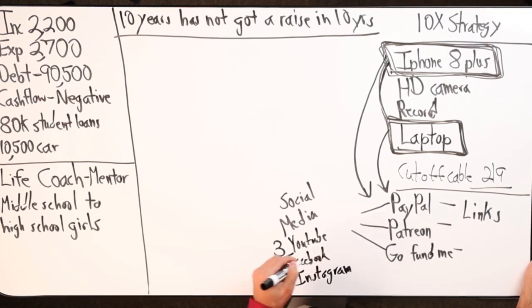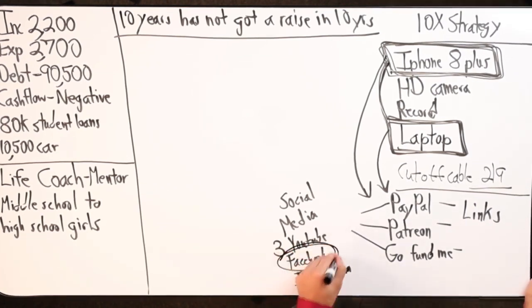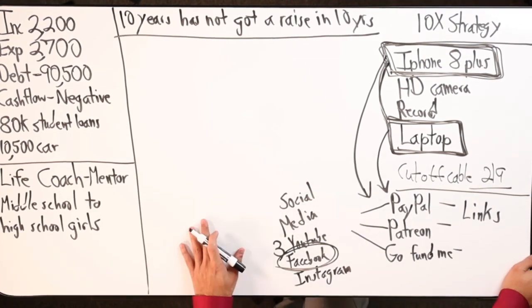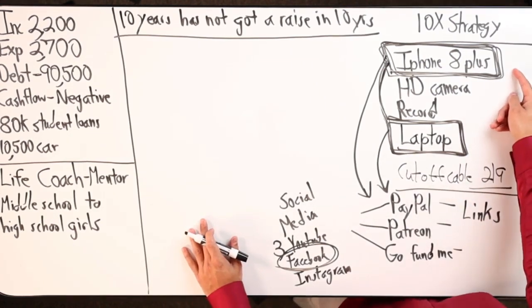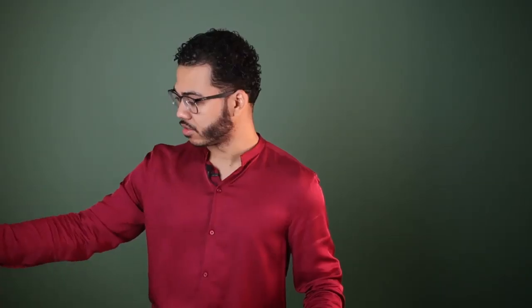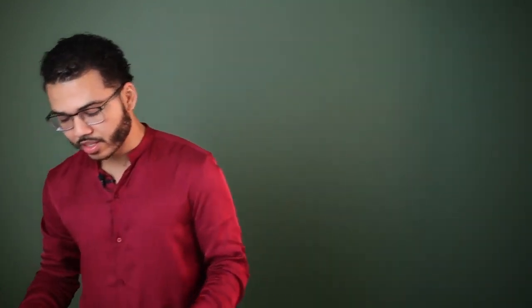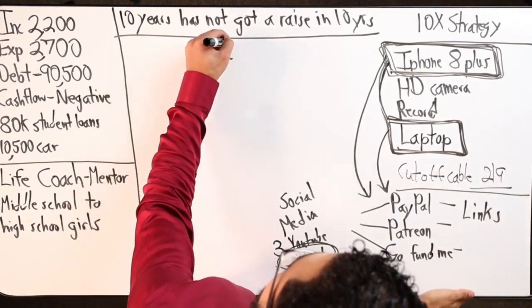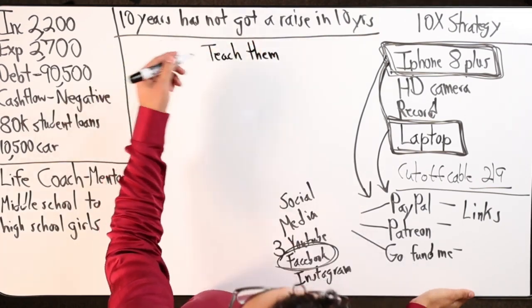I told her, pick one that you feel most comfortable with. And I believe she said Facebook. And you're going to create a group on Facebook. And you're going to start posting content using your money-making machine number one, iPhone 8. Just like this. Walk around all day long. Go to work. Show people your commute. Tell people your value. And you're going to say at the end of the video, beginning, middle: Hey, if you found value in this video, I'd love for you to help me out. My goal is to become a life coach. I want to mentor middle school to high school girls. And here is what I want to teach them.